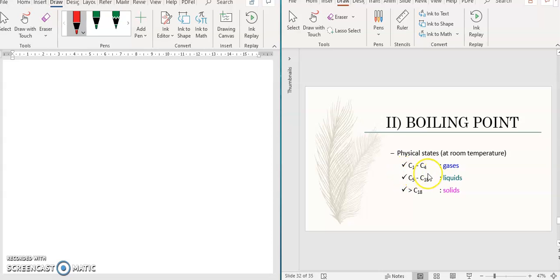For carbon, if it's C1 to C4, it's in the form of gases. That's why gas methane, gas butane. If you've ever used a lighter, the lighter uses butane gas. If it's liquid, it's in the form of C5 to C18, liquid form.